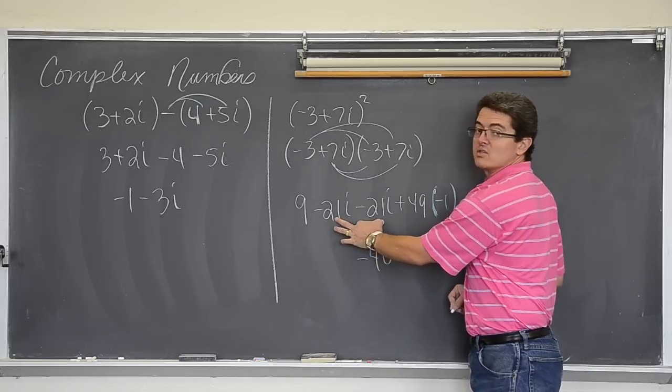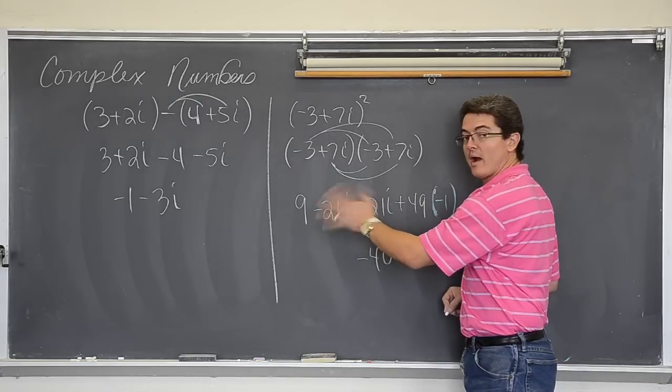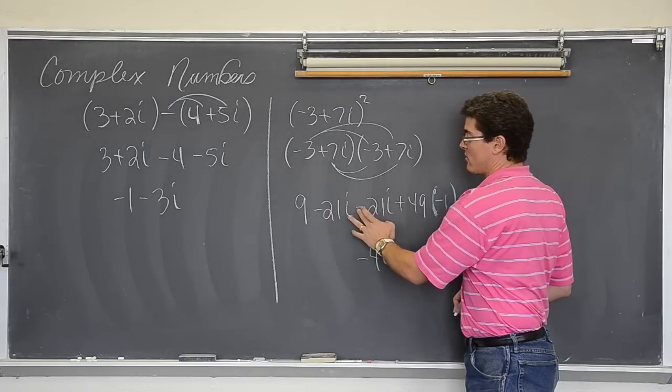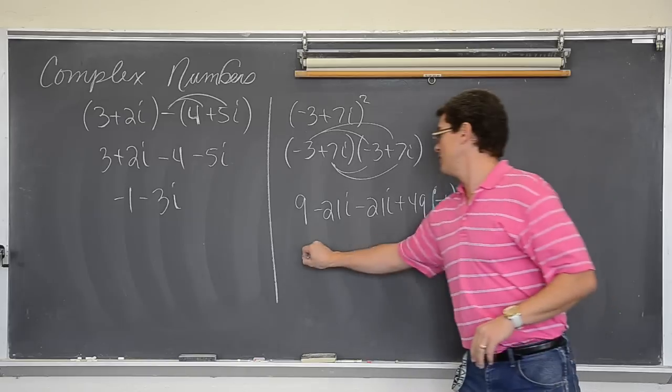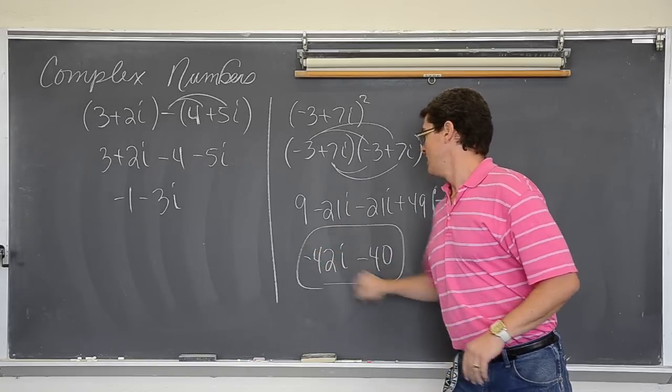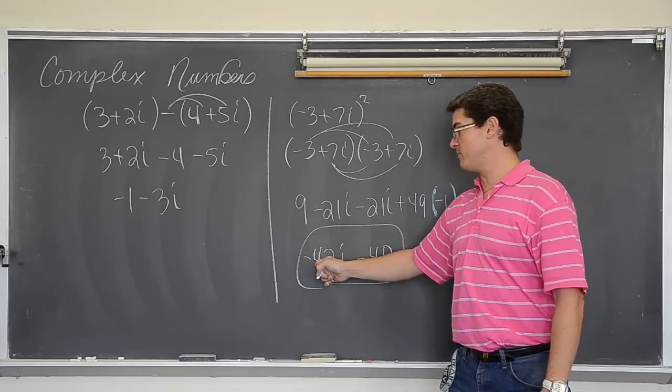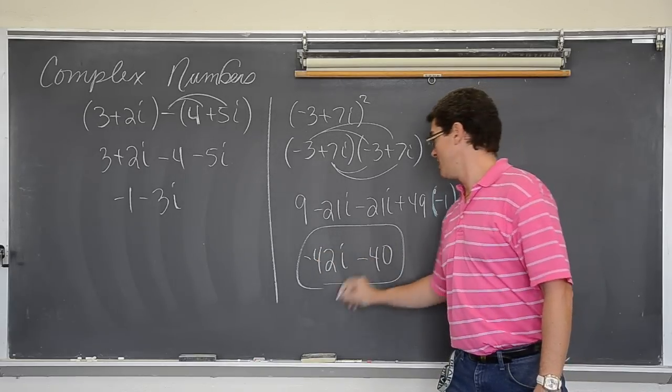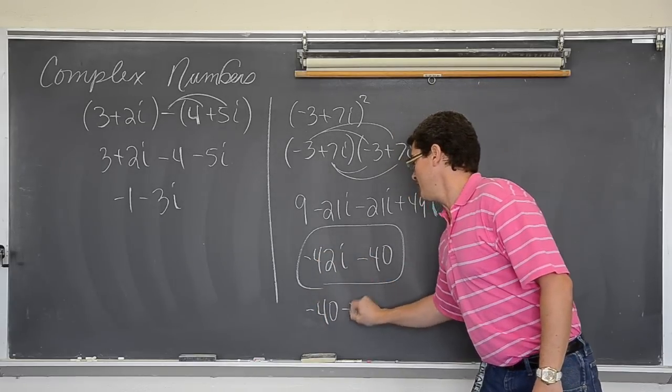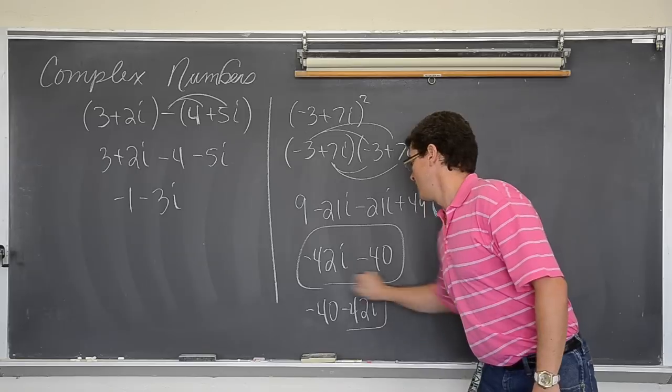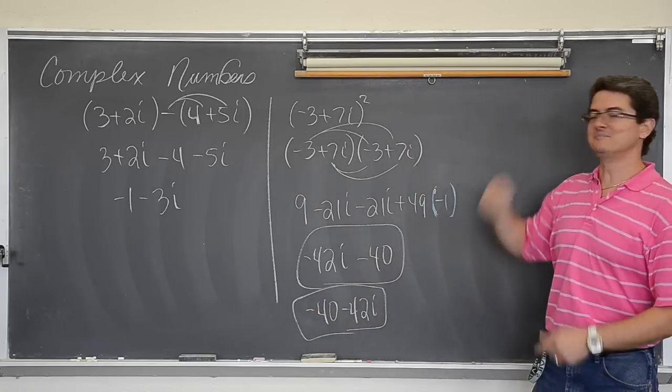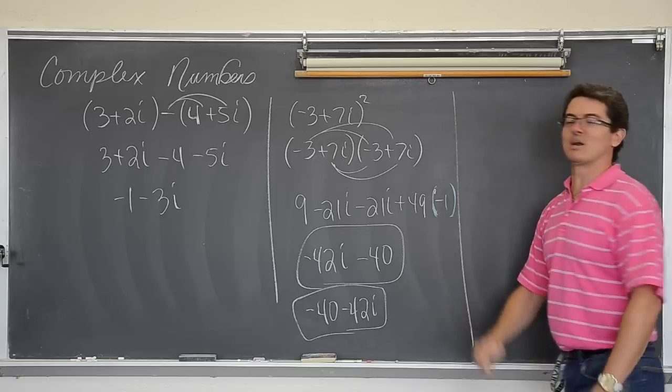And we have two like terms with our i's. Now they are not i squared. The i is going to stay there. Negative 21 and negative 21 is negative 42i. Now for proper form I need to write this in the other way because the real should come before the imaginary. So negative 40 minus 42i. Bam! Alright, moving on.